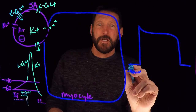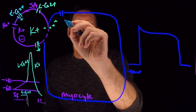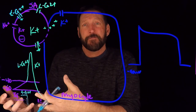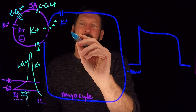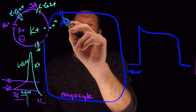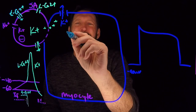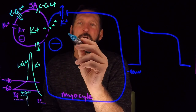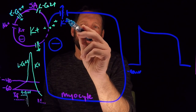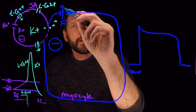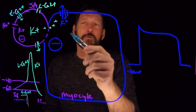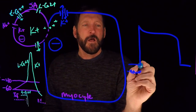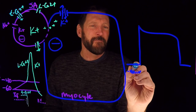At negative 90 millivolts, the myocyte has an inward rectifier potassium channel open. 'Inward rectifier' means it corrects for something: potassium goes out along its chemical gradient, but large negatively charged anions inside attract it back in. Potassium goes out, takes its positive charge, the inside becomes more negative, and potassium comes right back in — inwardly rectifying its outward movement. On its own, the cell oscillates and never reaches threshold.